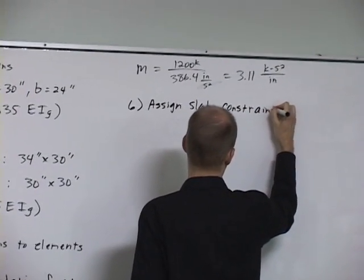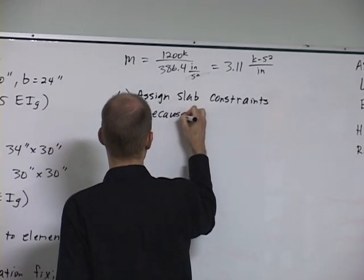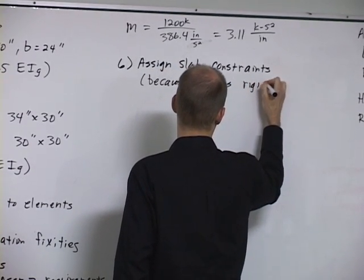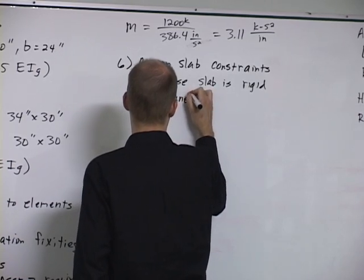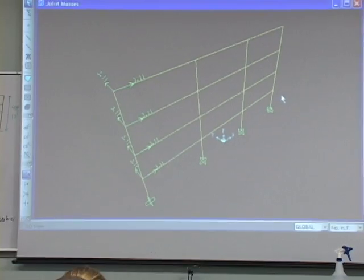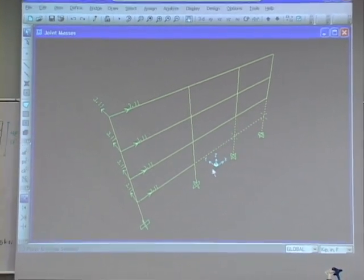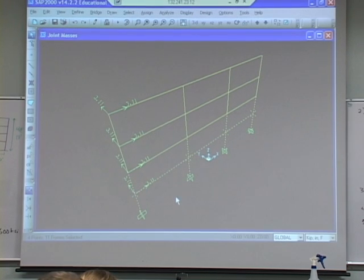So now what we need to do is we need to assign slab constraints, and the reason for this is because the model currently only has the beams in it and there's a slab there that the model doesn't know about. And what the slab does is it constrains all of the nodes together along the floor.